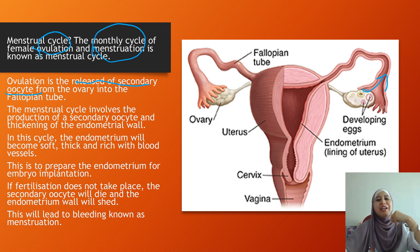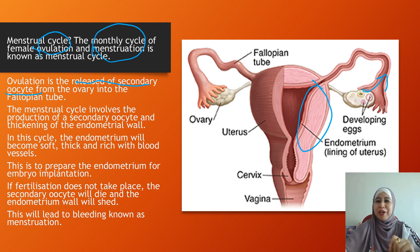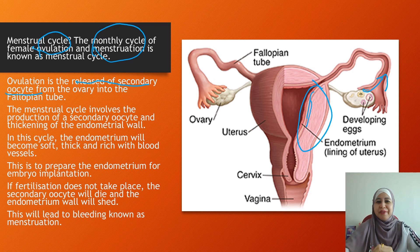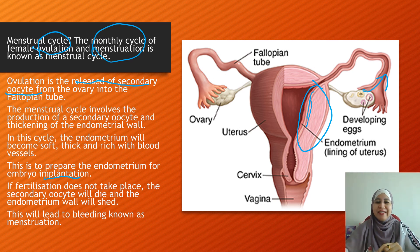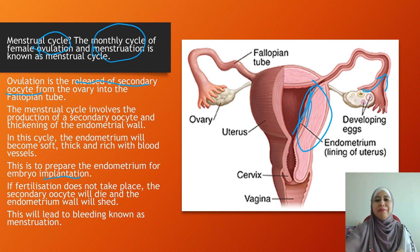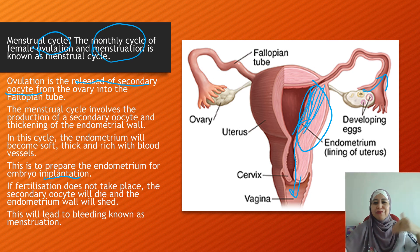The menstrual cycle involves the production of the secondary oocyte and also the thickening of the endometrium wall. In this cycle, the endometrium wall will be soft, thick, and rich with blood vessels, to prepare for embryo implantation. But if fertilization does not take place, the secondary oocyte will die and the endometrium wall will break down and move out to the vagina. This shedding of the endometrium wall is known as menstruation.